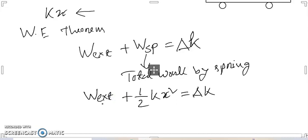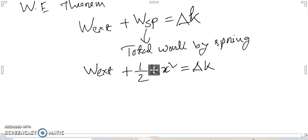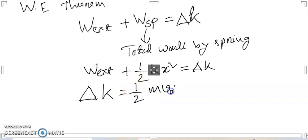As the block was initially stationary, it will acquire a velocity equal to v0, the same as that of the plank, at the time of maximum compression of the spring. The change in kinetic energy of the block relative to the ground is delta K equals half mv0 squared.